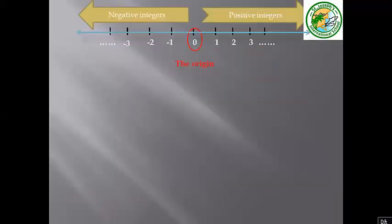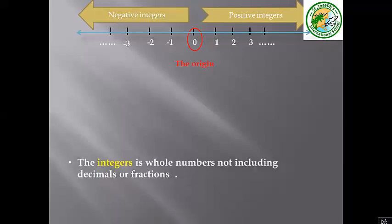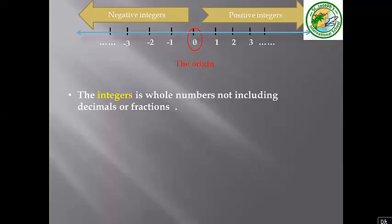We will show you the integers on the number line. We have negative integers on the left of zero, and positive integers on the right of zero. The integers are whole numbers, not including decimals or fractions.